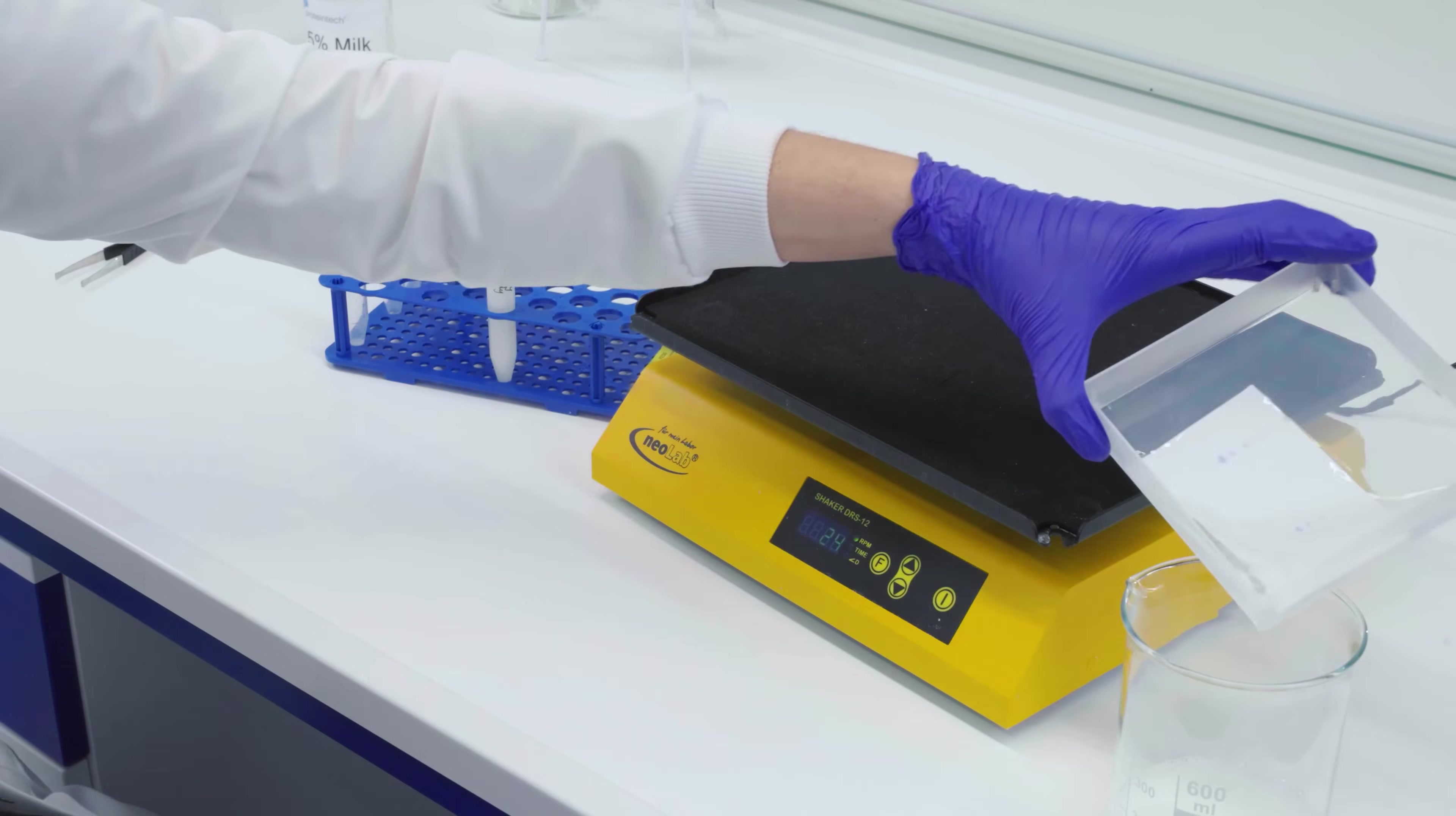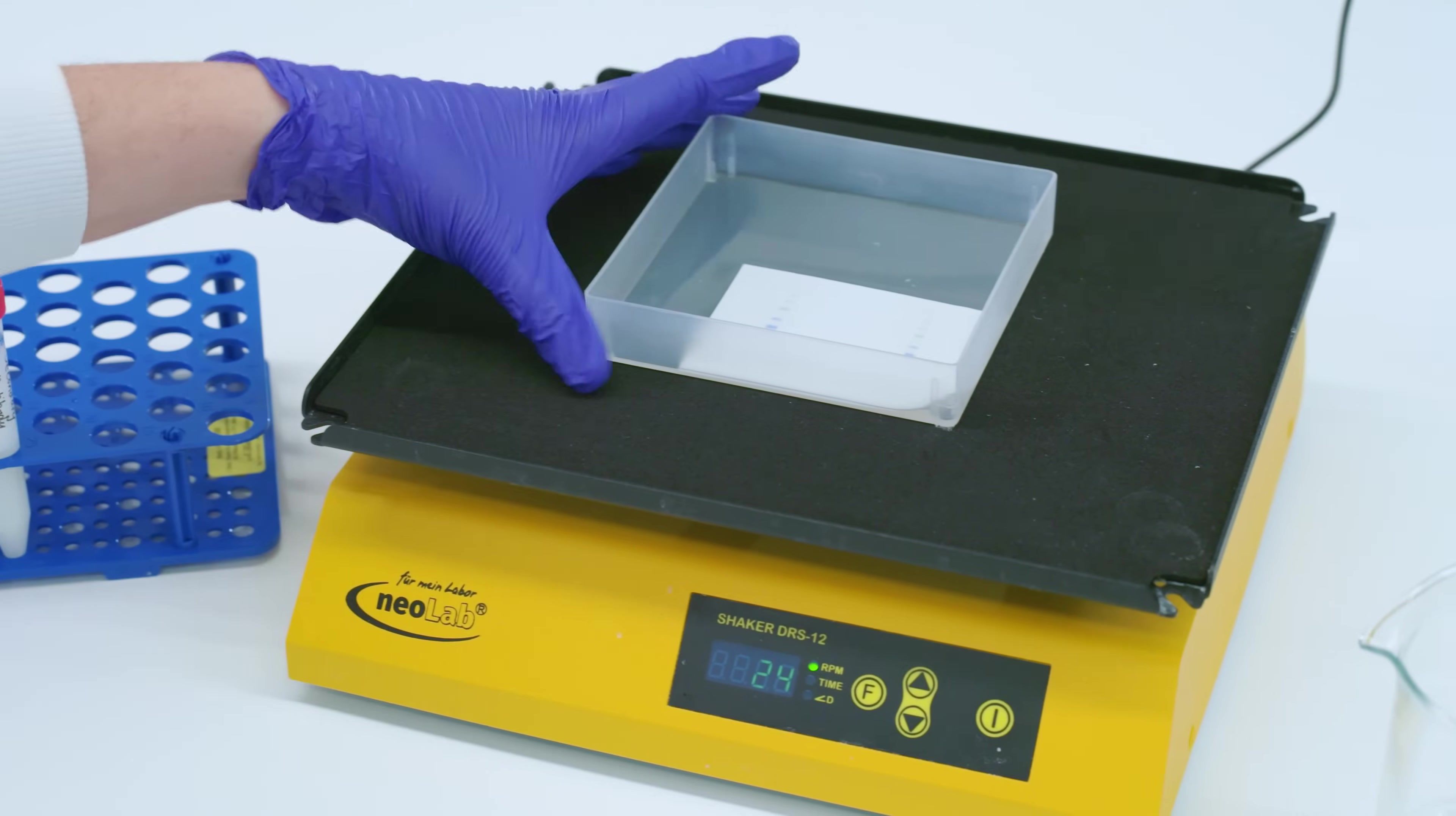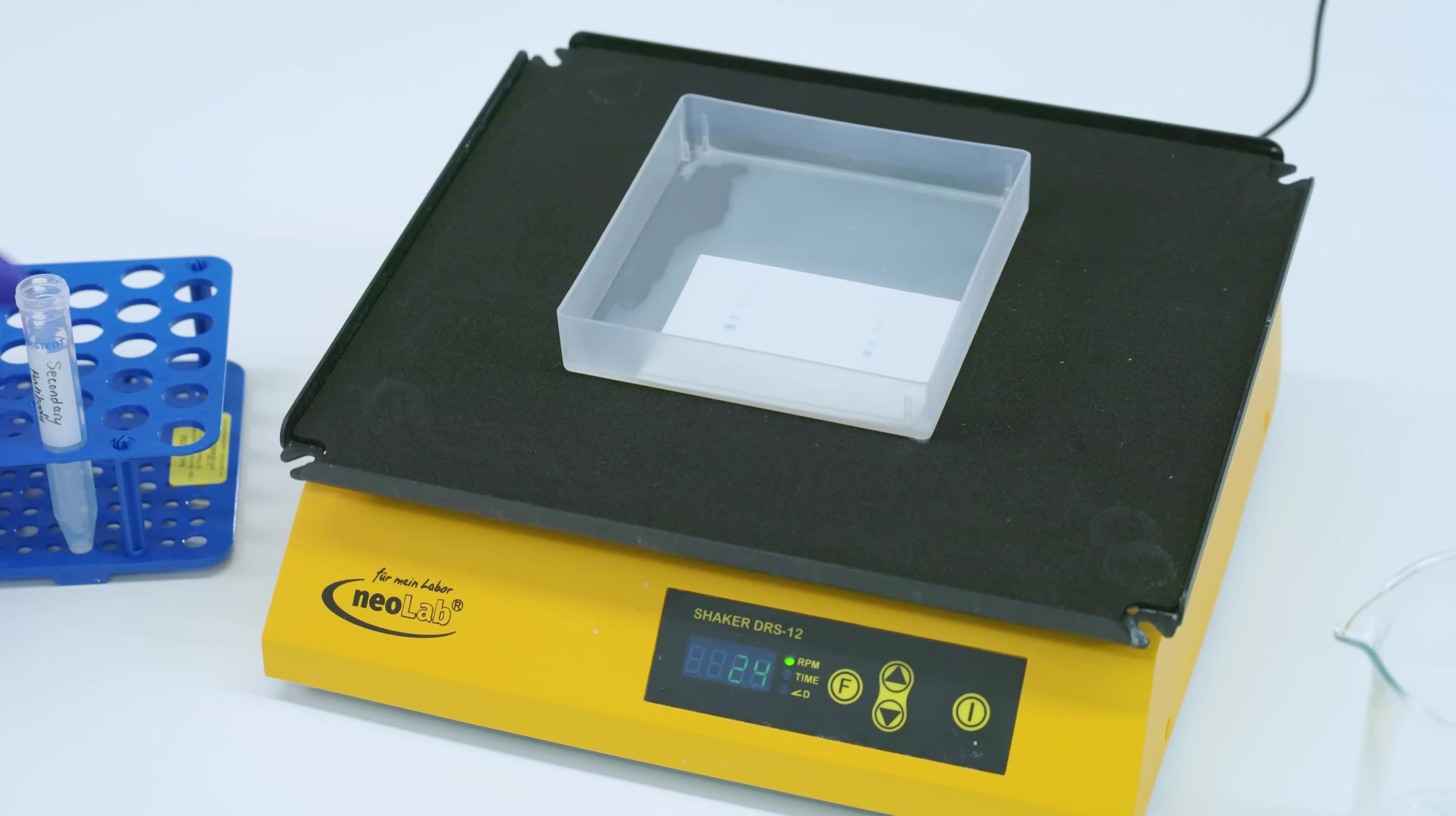Pour off the final wash buffer and incubate the membrane with the secondary antibody with agitation for 1 hour at room temperature. As with the primary antibody incubation step, the dilution factor and incubation times may need optimization.